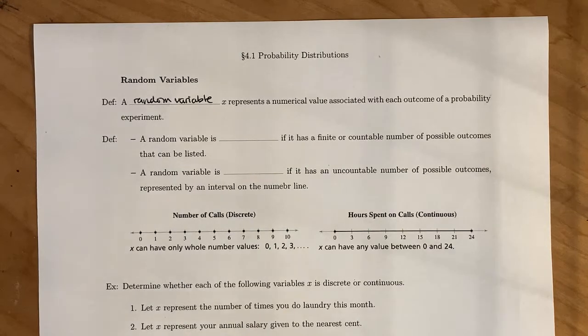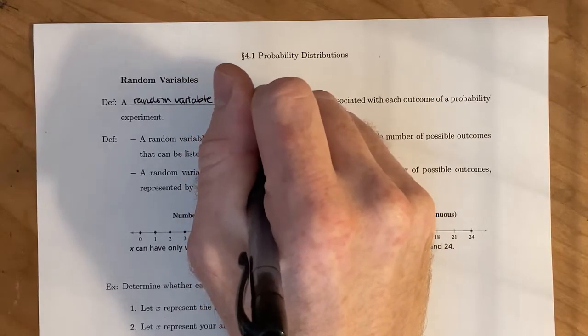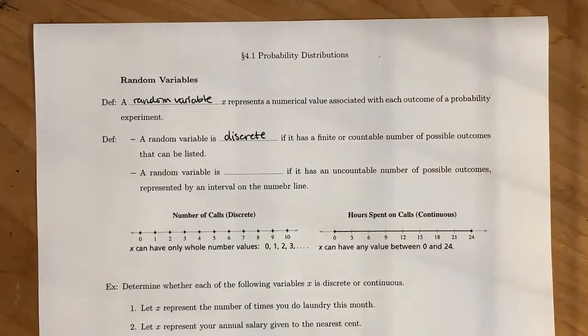There's going to be two different types of random variables that we look at. A random variable is discrete if it has a finite or countable number of possible outcomes that can be listed. So essentially finite means there's just a set amount of possible outcomes, or countable means that you can sit there and actually count them.